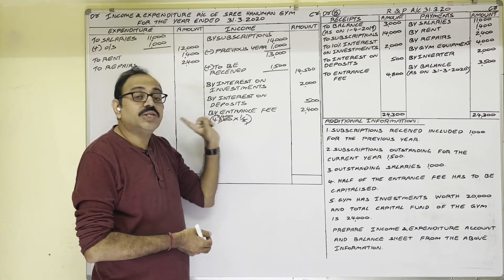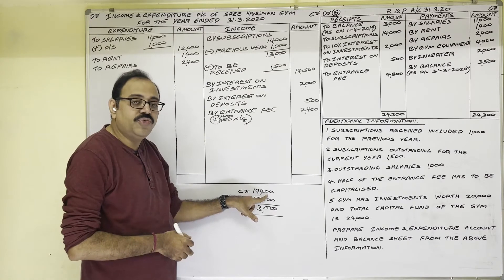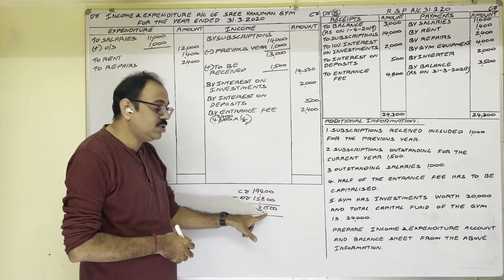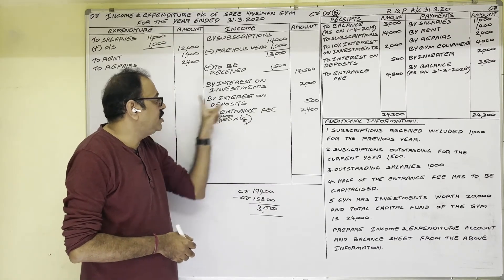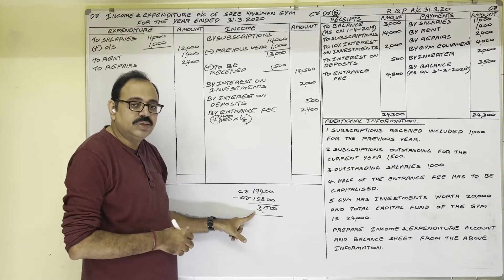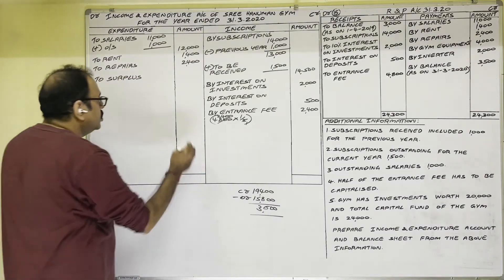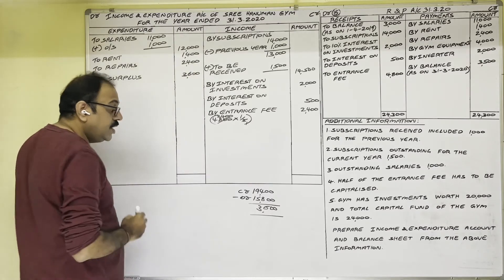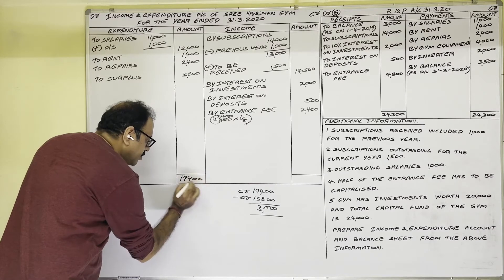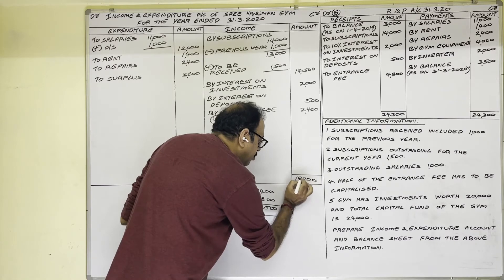Finally, find the surplus or deficit. Credit amounts total: 19,400. Debit amounts total: 15,800. Difference: 3,600. The credit side has incomes and the debit side has expenses. Income is more than expenditure, so the answer is surplus. On the debit side write surplus 3,600. Both sides total 19,400. Income and Expenditure Account is completed.